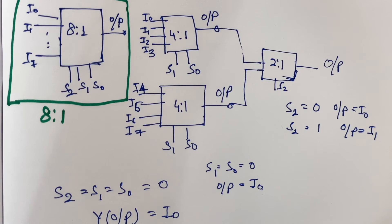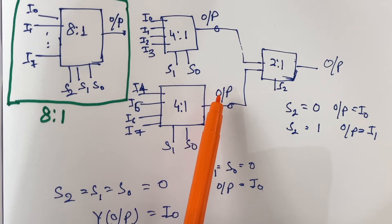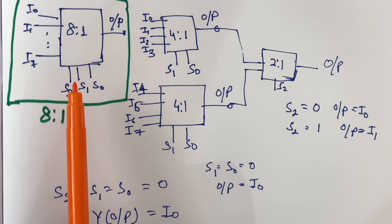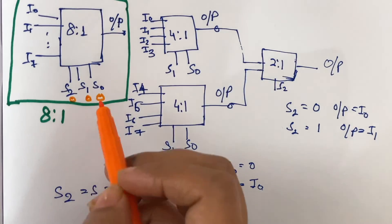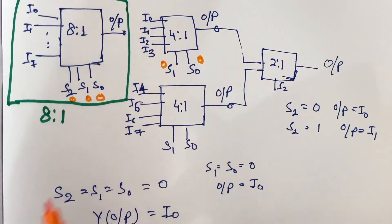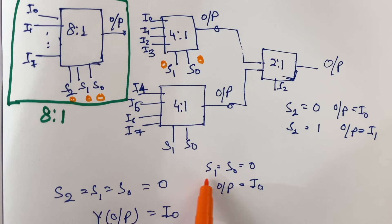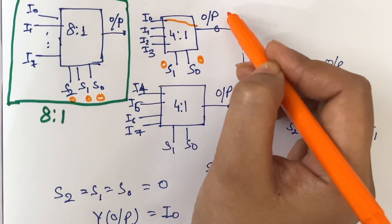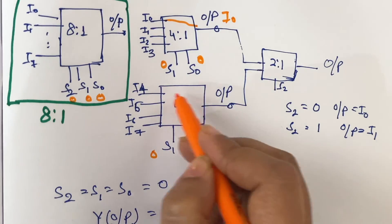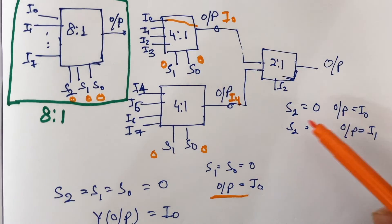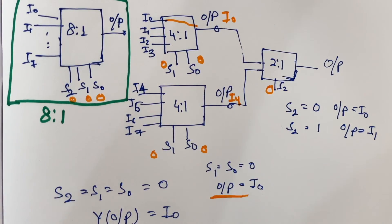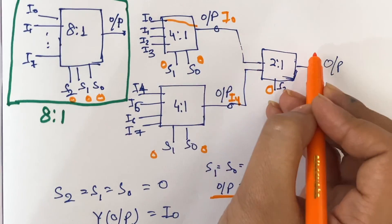Now let's verify whether the new circuit gives the correct output. Considering s2=s1=s0=0: since s1 and s0 are both 0, the first 4-to-1 multiplexer outputs i0, and the second also outputs i0 (which corresponds to i4). For the 2-to-1 multiplexer, since s2=0, its output is i0. Both circuits give the same result.